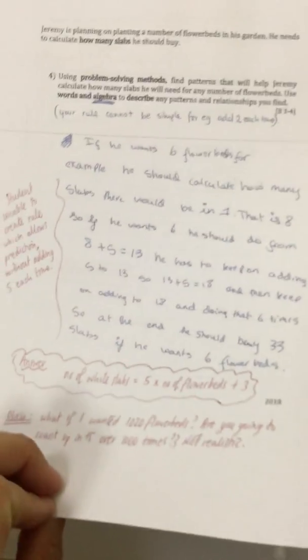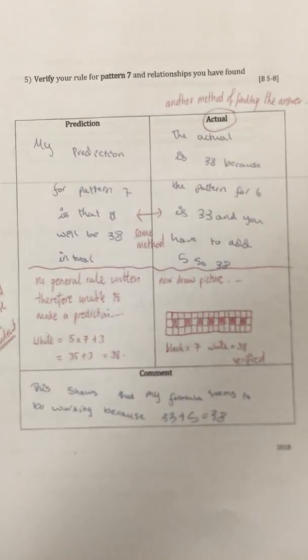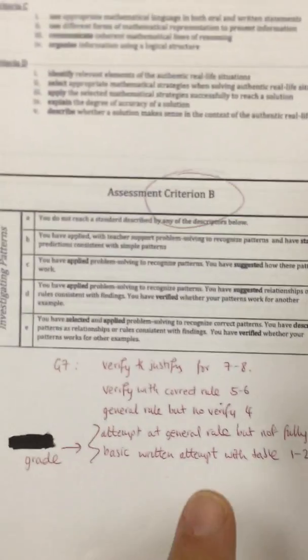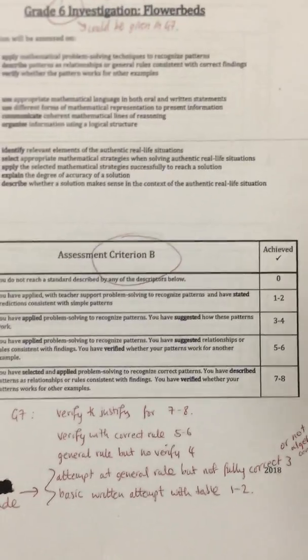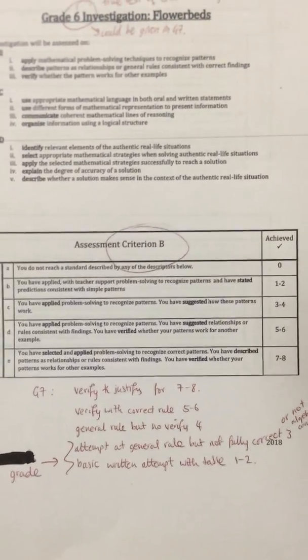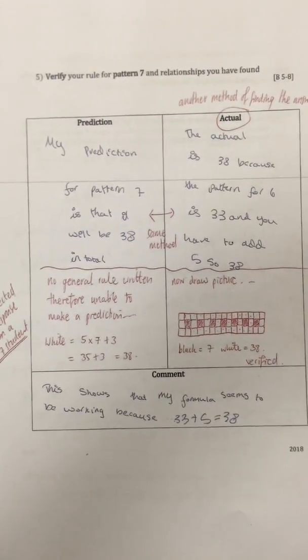In this school, students are taught how to do a verify table, which allows them to achieve level 5, 6, 7, or 8. Generally, getting 2 verify tables is needed. The criteria says you have verified whether your pattern works for other examples. For level 5 to 6, you verify for one example. For level 7 to 8, you verify successfully for more than one.